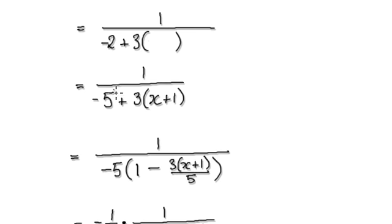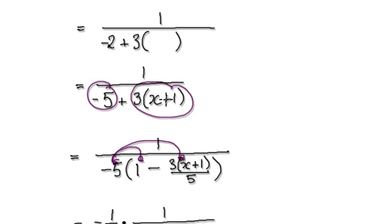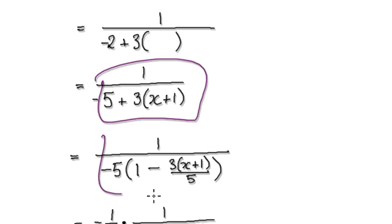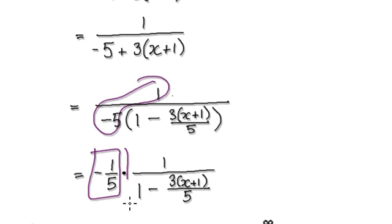Looking at this, if you factor out the negative 5, that will then give you this. So if you multiply this out it will give you negative 5; multiply this out it will give you positive this thing here. So rewrite this as this, and then factor out the negative 5. Now you've got one block multiplying another block.